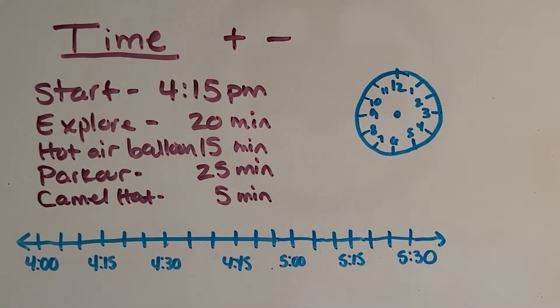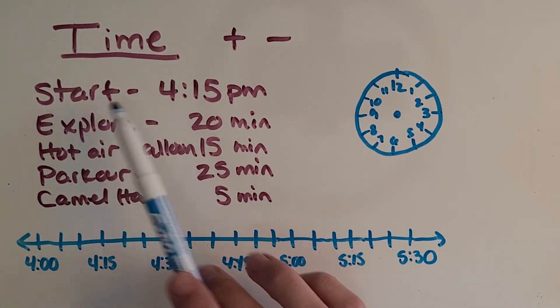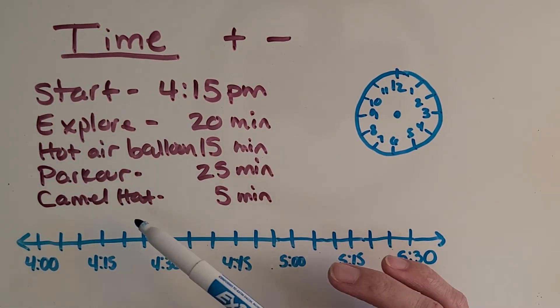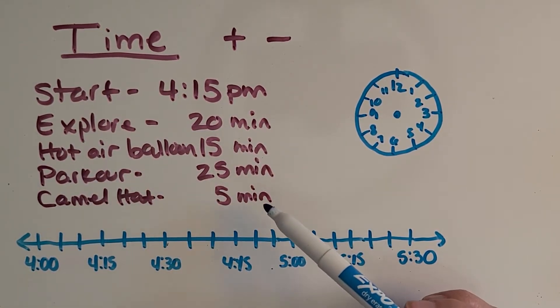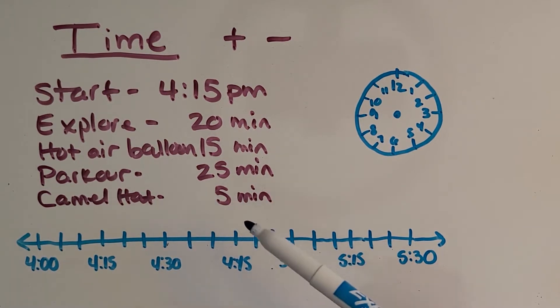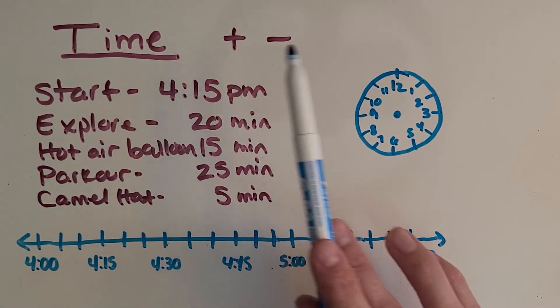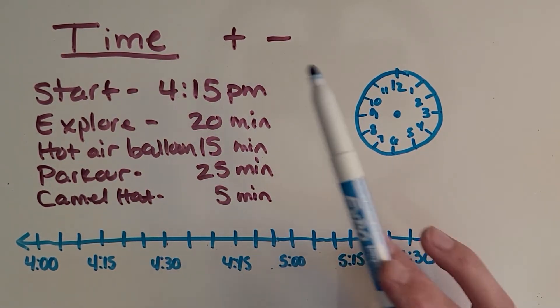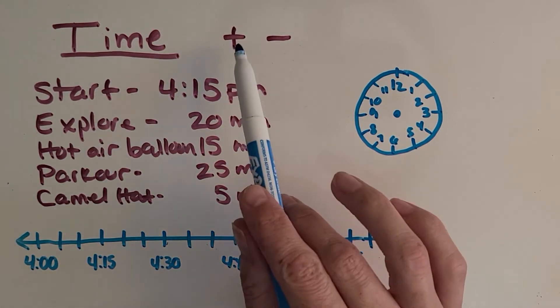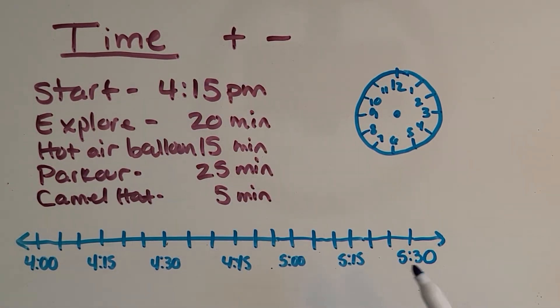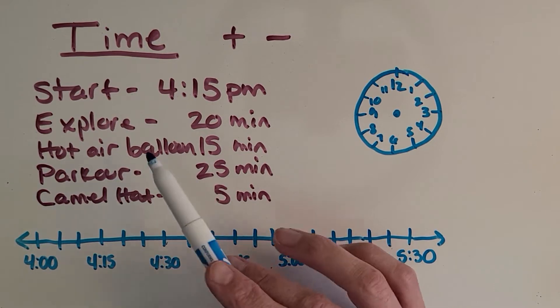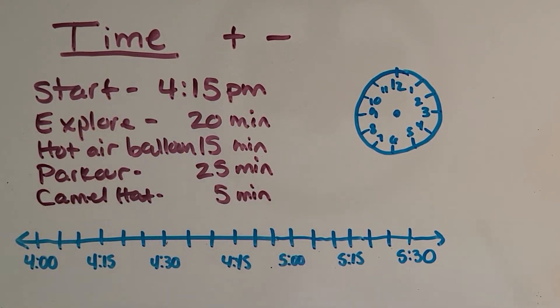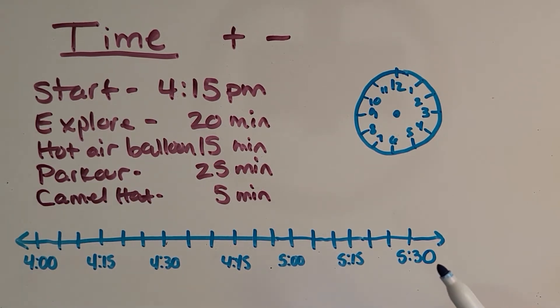In this problem we have a start time and we have several different activities that we did in Minecraft, and we want to know what time I stopped playing. So what do you think we're doing? Are we adding this time on or are we taking it away? Okay great, we are adding this time. We're going to end up with an end time that's later than 4:15 p.m.